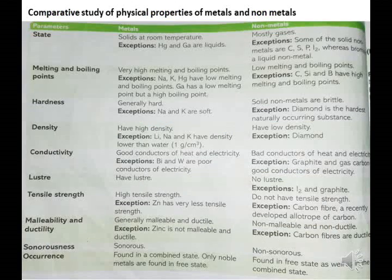Comparative study of physical properties of metals and non-metals. State: metals are solid at room temperature. Exception — some solid non-metals are Carbon (C), Sulfur (S), Phosphorus (P), and Iodine (I2). Bromine is a liquid non-metal.